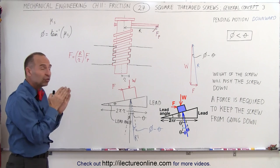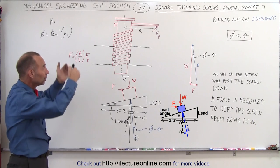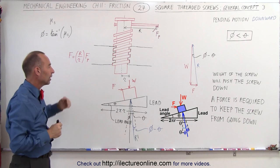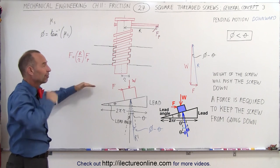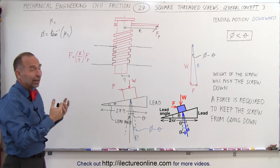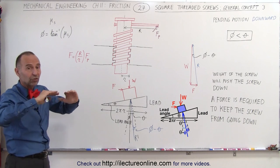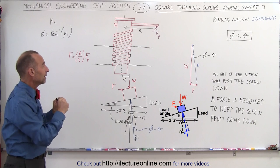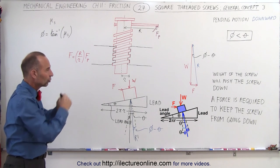So if the angle theta is smaller than the lead angle, the screw will actually slide down on its own and it will require a small amount of force to keep it from going down. It's not a likely scenario unless the weight of the screw is very heavy and there's not a lot of friction between the thread and the object that the screw is going into.